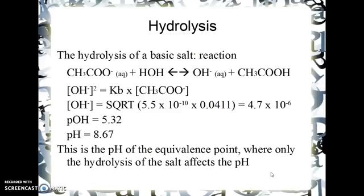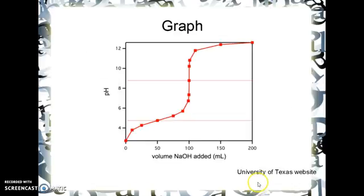This is the pH of the equivalence point. Only the hydrolysis of the sodium acetate affects the pH at the equivalence point, because all the original acid H⁺ and all the original OH⁻ from the sodium hydroxide have turned into water. The only thing left is the acetate ion reacting with water to make it basic. On a titration trace using a pH probe, when titrating a weak acid like acetic acid with a strong base, you can see that the equivalence point is well above 7.